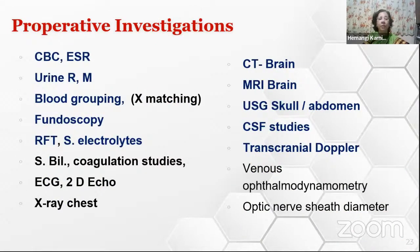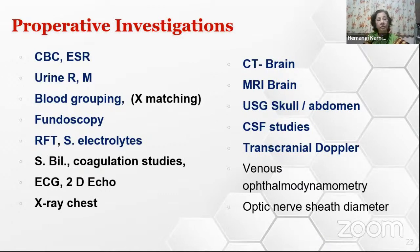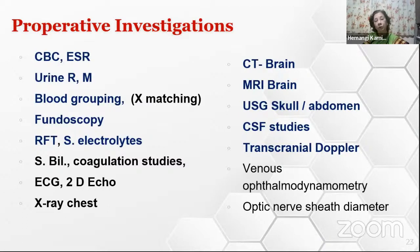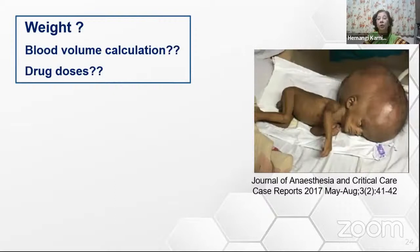Preoperative investigations would include standard CBC, ESR, urine routine, and microscopy. VP shunt usually does not require much blood loss, so grouping should be done but cross-matching is not really required. However, fundoscopy is required to note raised ICP. RFT and serum electrolytes are needed because of associated abnormalities in sodium balance. CSF studies are required—infected CSF should not be put into another body cavity. CT or MRI brain would be useful, and transcranial Doppler for infants. Additional tests like ECG and 2D echo may be appropriate for syndromic babies. X-ray chest is required for TB meningitis patients.